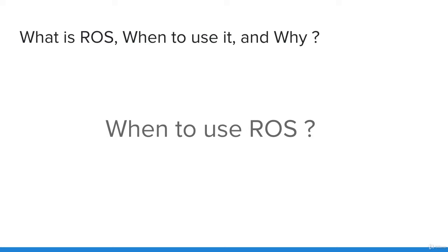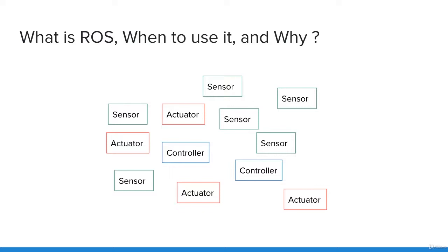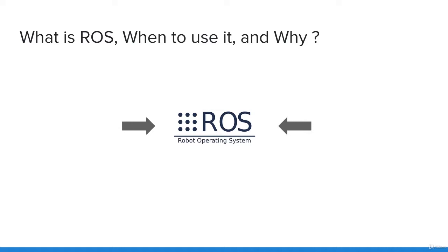Maybe you've already started to program robots with an Arduino board or with custom code on a computer. What you will quickly experience is that the more sensors, actuators, and controllers you add to your application, the more complex it becomes — until you reach a point where everything is mixed up and you can't add any code for a new sensor without having a huge headache. ROS is here to help you develop powerful and scalable robotic applications.